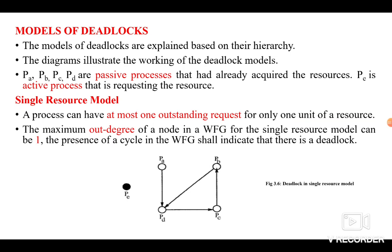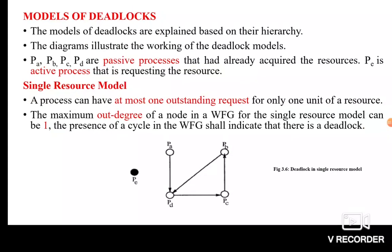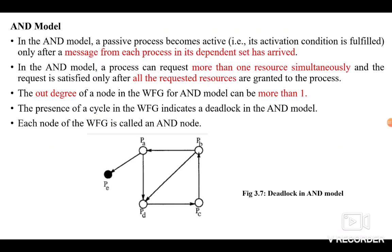How can we detect the deadlock? The presence of a cycle indicates we have a deadlock in the WFG, the wait-for-graph. So what is a cycle? Here we have the cycle: PD → PE → PC → PB → PD. We start from node PD and again reach the same node PD. This cycle indicates we have a deadlock in the Single Resource Model.